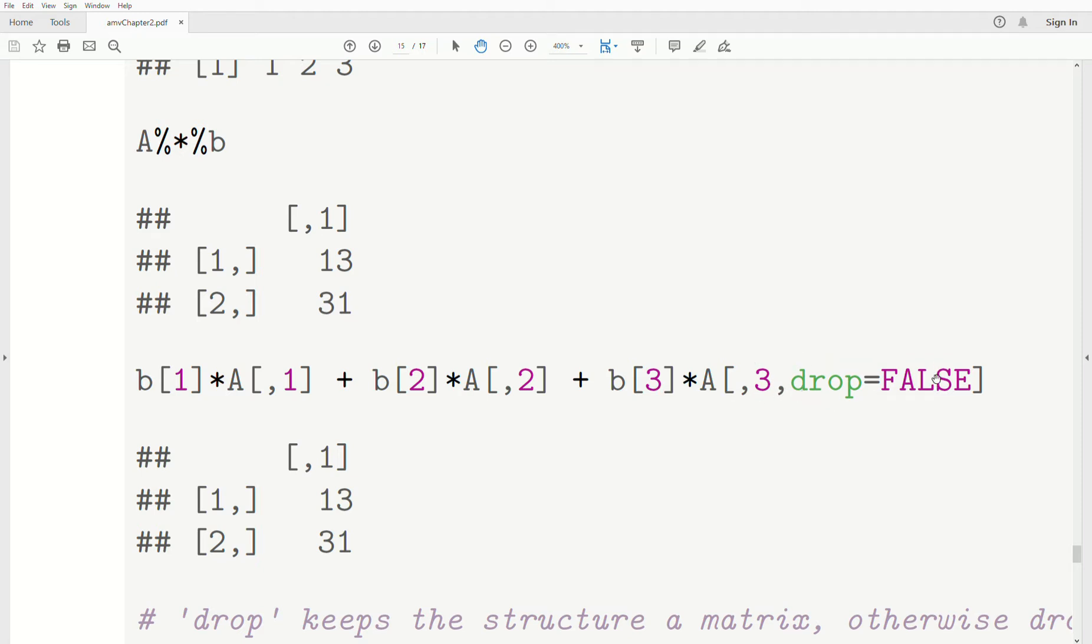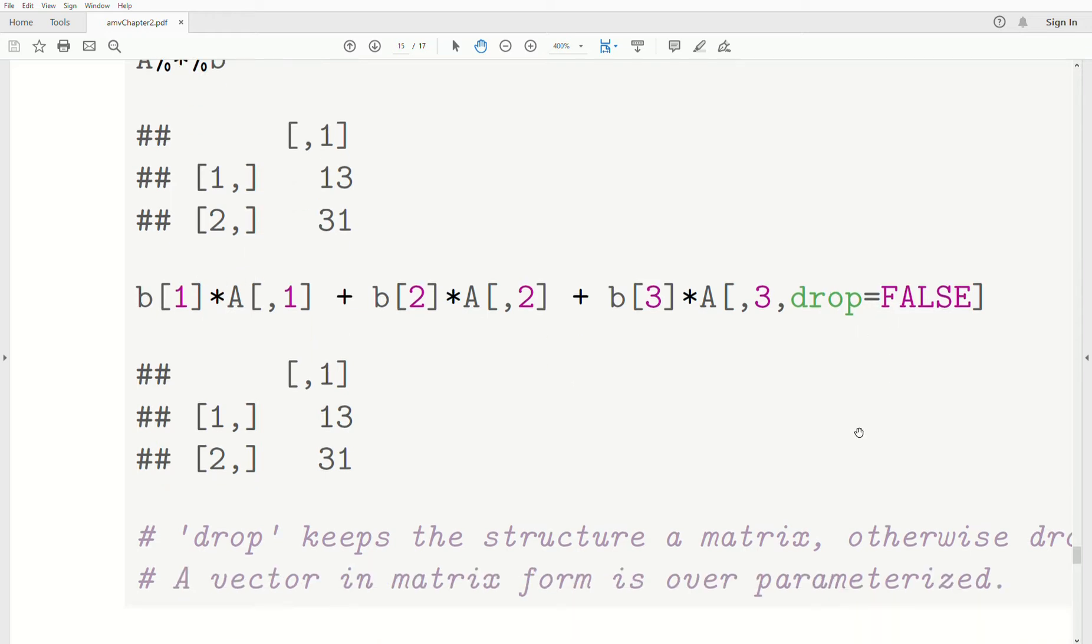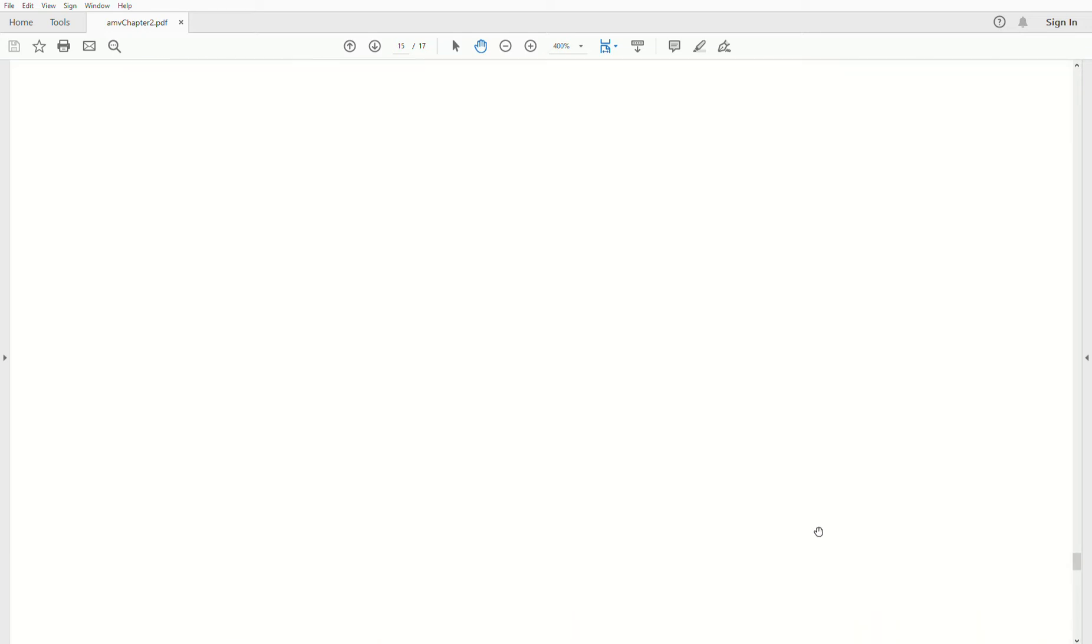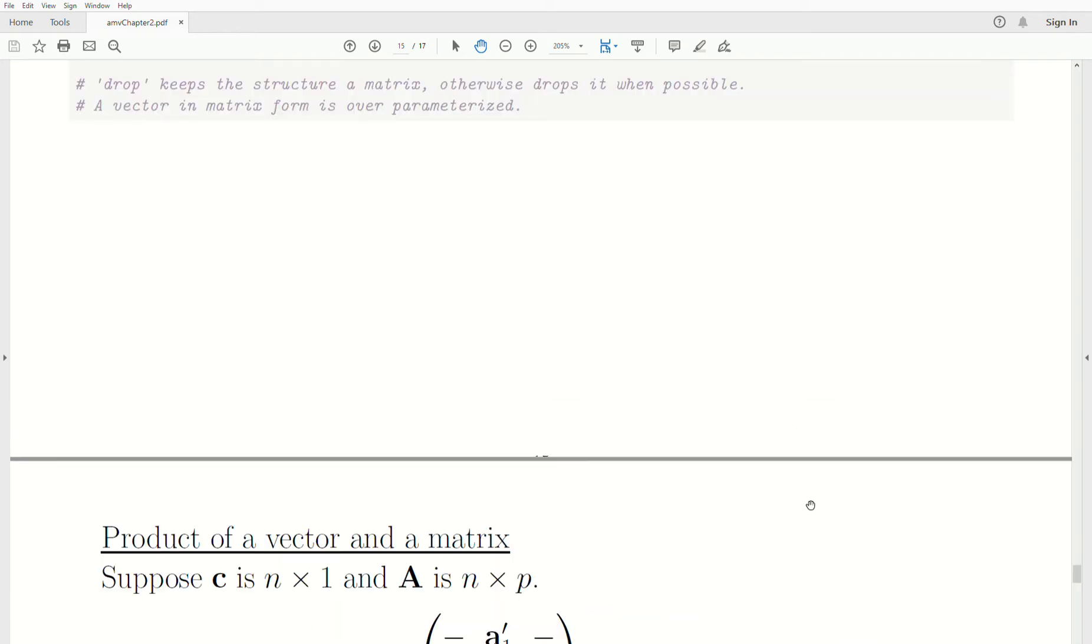Now, there are some more options when you're looking at matrices, and one of them is called drop. Matrix R tries to be as efficient as possible. So after a matrix multiplication, if it's no longer a matrix, so if it reduces it to a vector or a scalar, it drops the structure of a matrix. So by default, drop is equal to true. But I wanted to keep it in this matrix structure of a two-by-one matrix, so I put drop equals false.